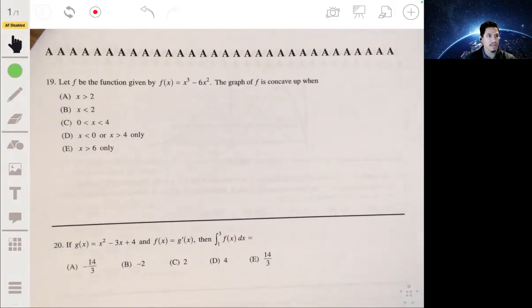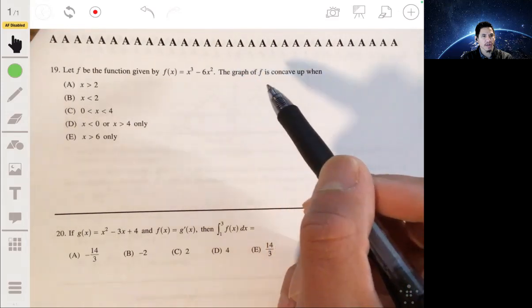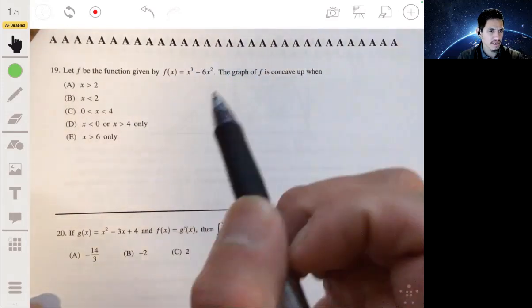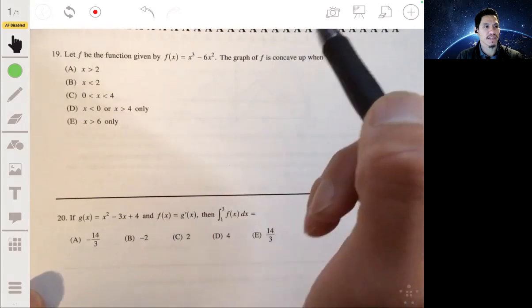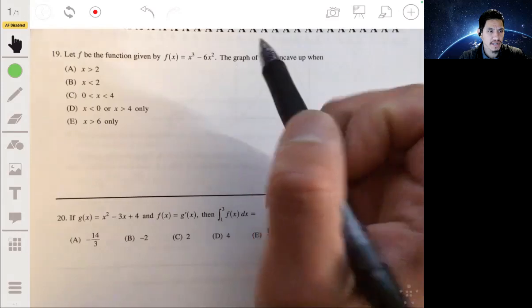19. Let f be the function given by f of x equals x cubed minus 6x squared. The graph of f is concave up when. So the key here is to find the equation of the second derivative and just see when it's going to be positive and when it's negative.